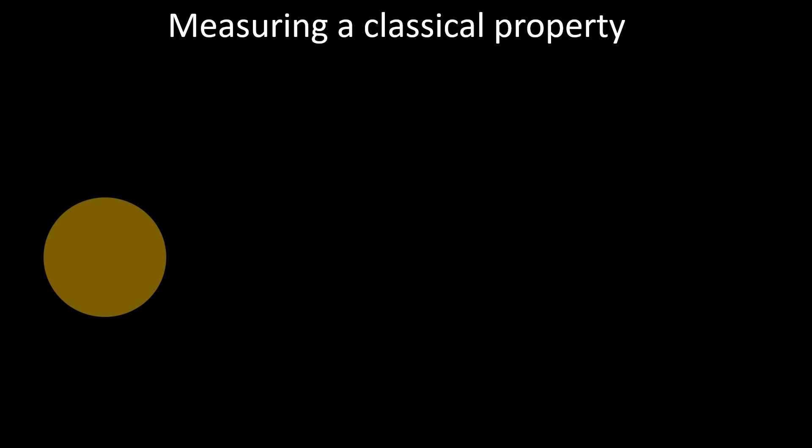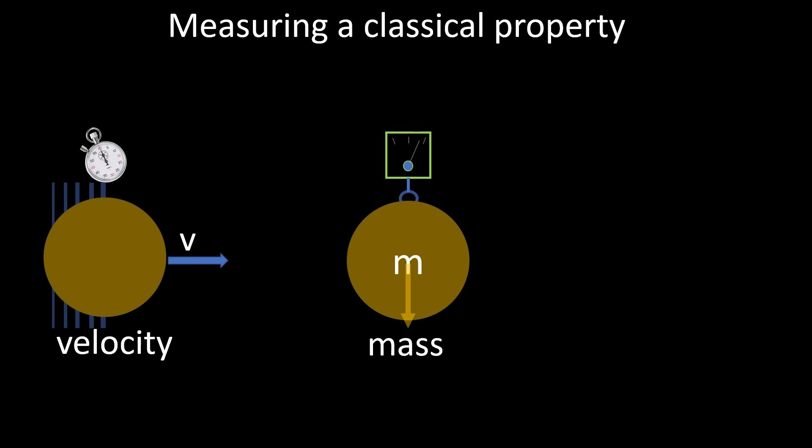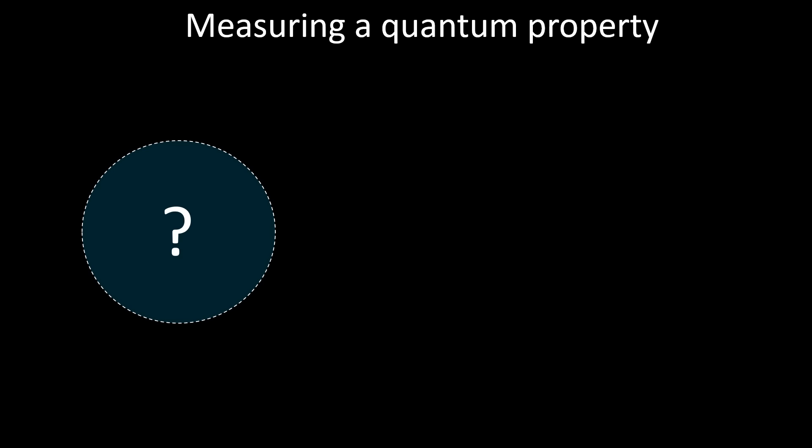This brings me to the question what a quantum measurement actually is. In classical mechanics, doing a measurement is generally about determining a specific property of an object. We try to put a value for example on its speed or mass or temperature.